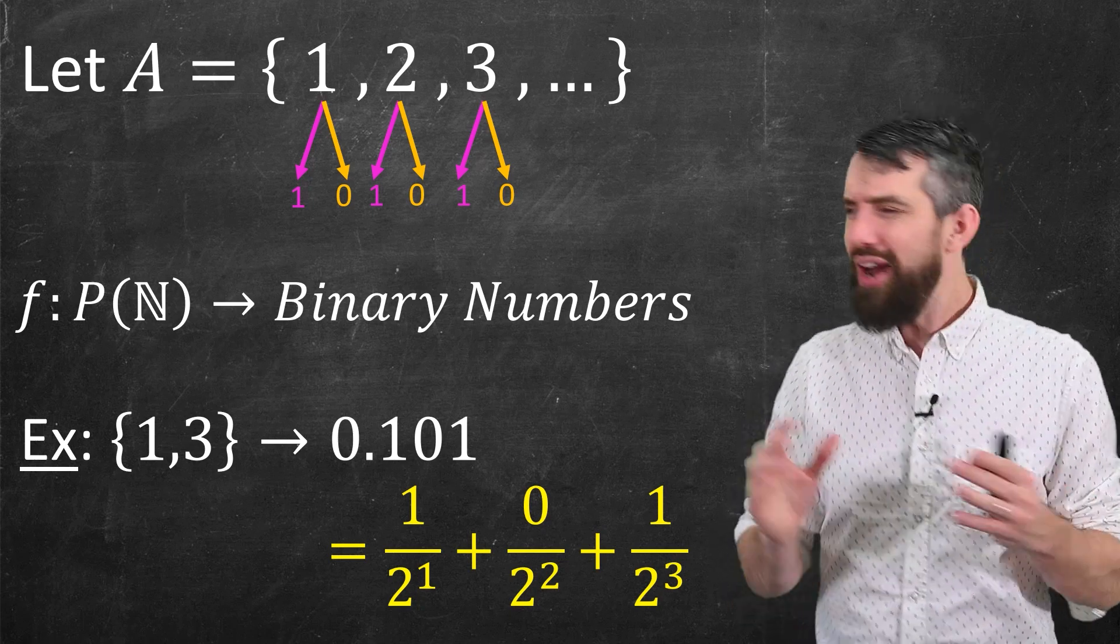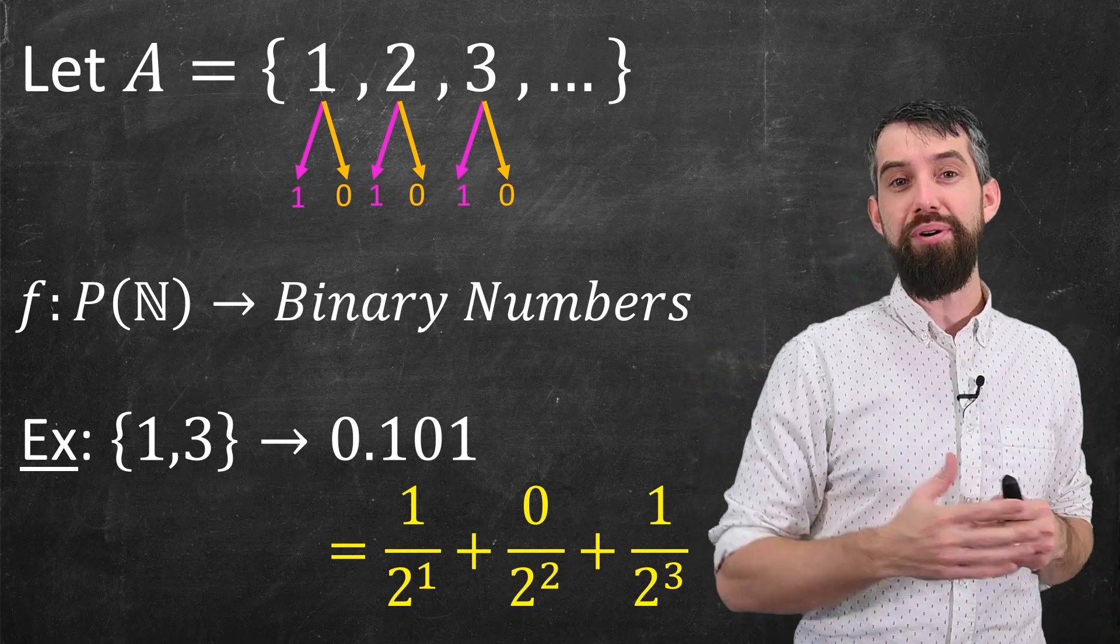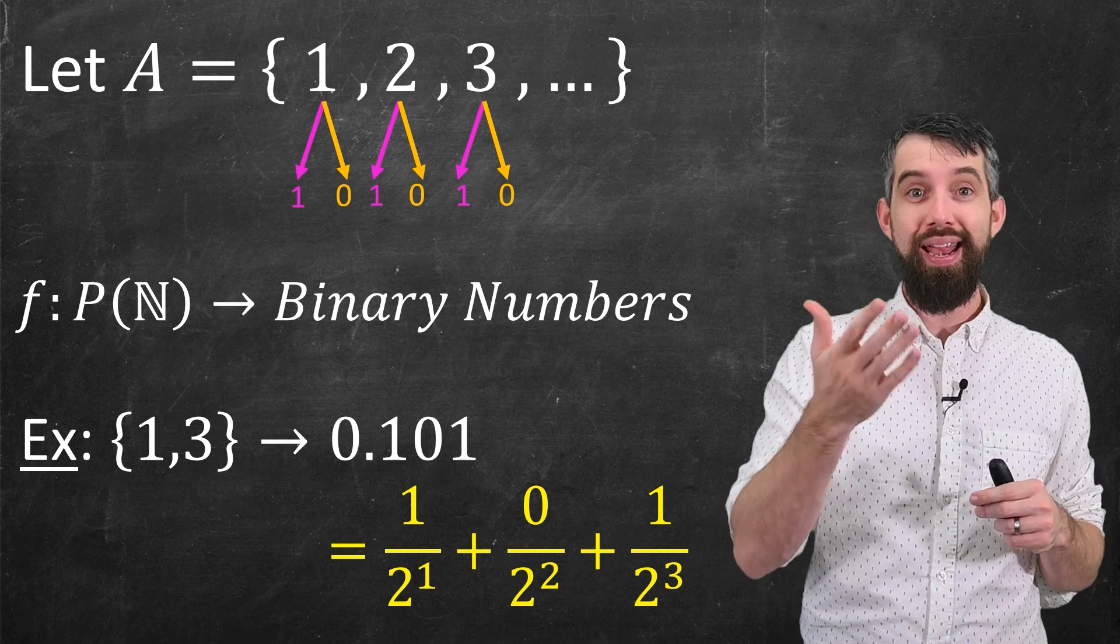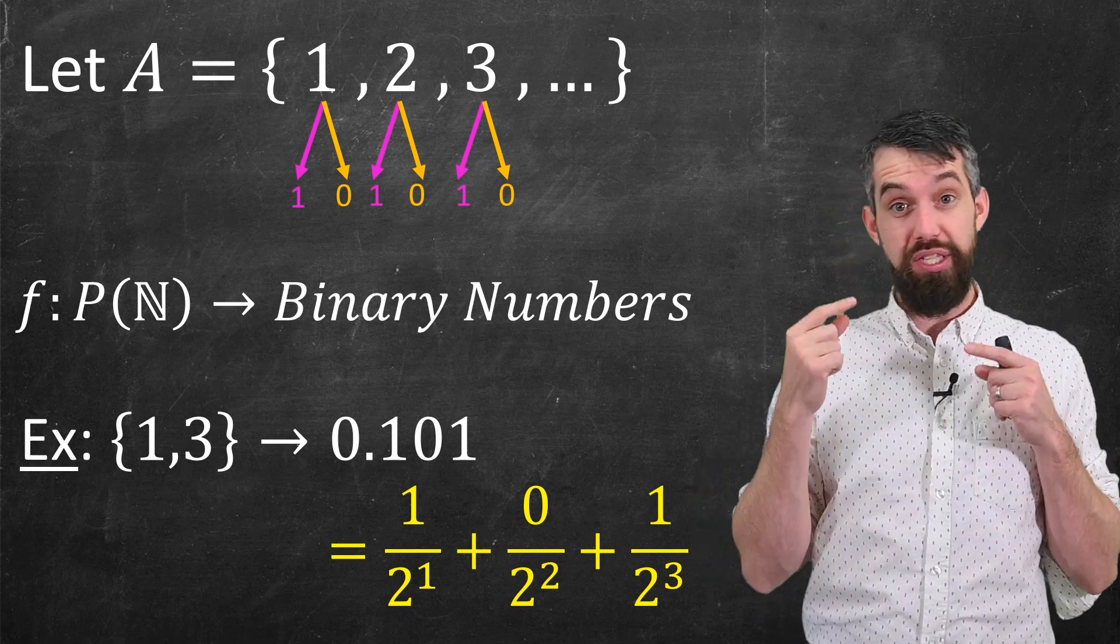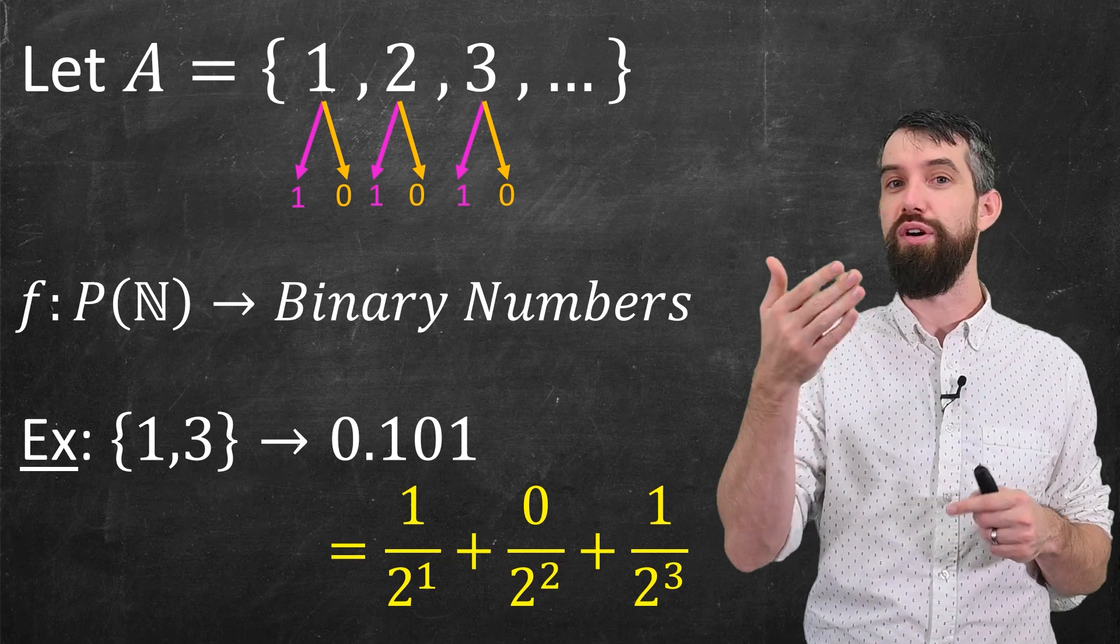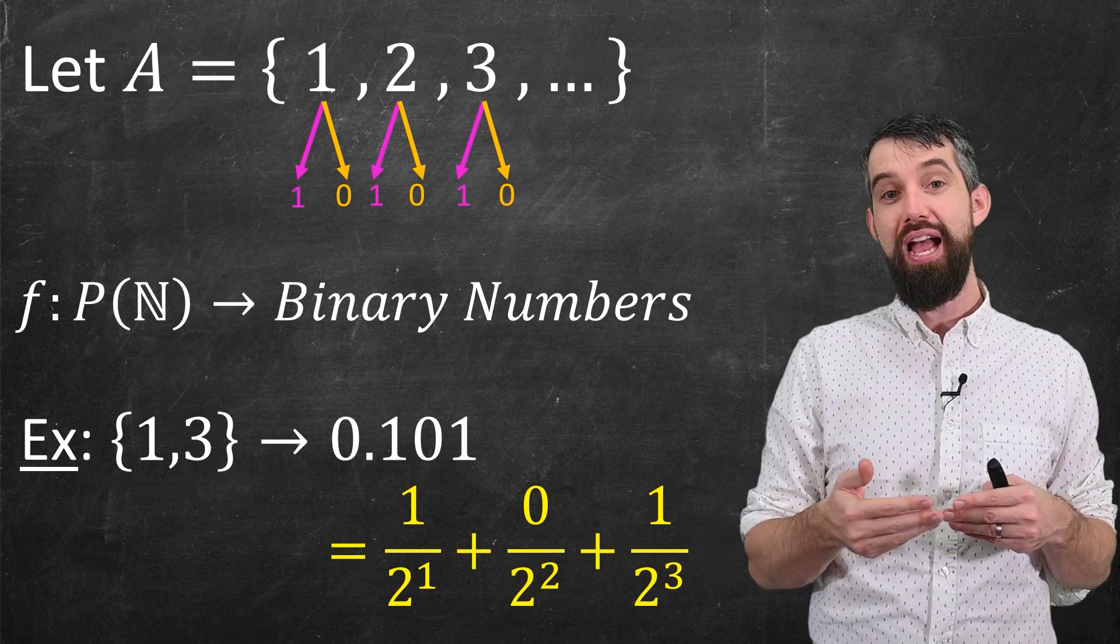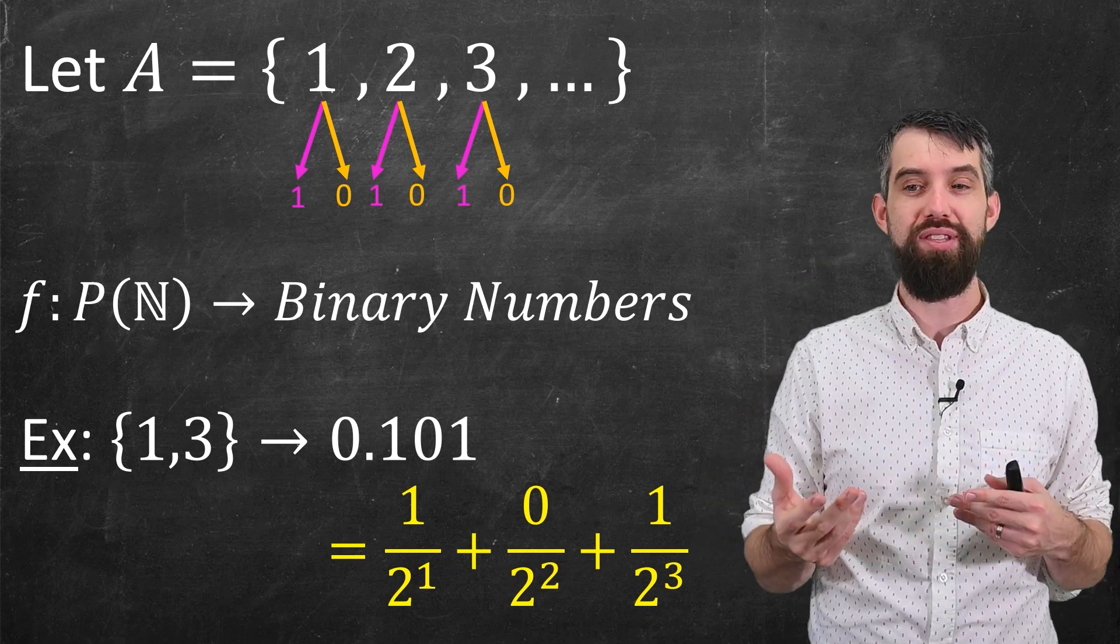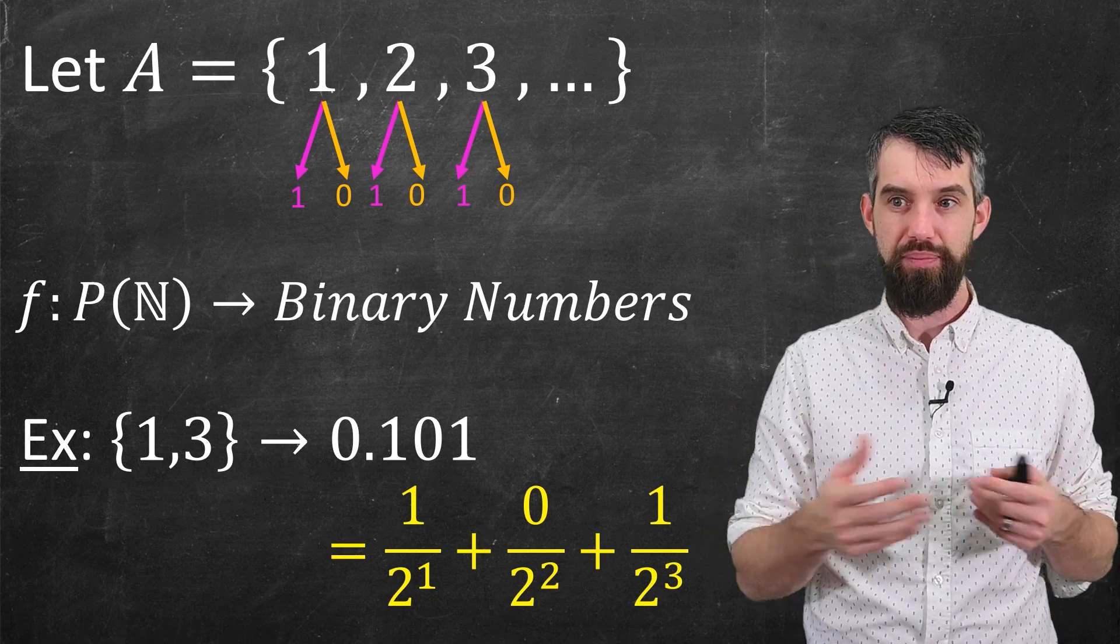By the way, so what is 0.101 in binary? After the point, the first one refers to one half. The second location, the zero refers to zero over two squared, zero over quarter. And the third is one now over two to the third, or one eighth. So this is just a half plus an eighth. Okay,